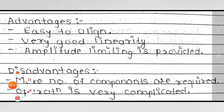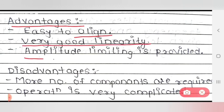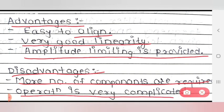The advantages of the ratio detector are: first, it is easy to align; second, very good linearity; third, amplitude limiting is provided. The disadvantages are: first, more number of components are required; second, operation is very complicated. This completes the description of the ratio detector circuit.